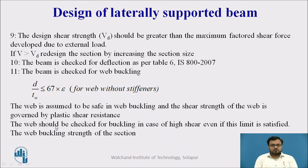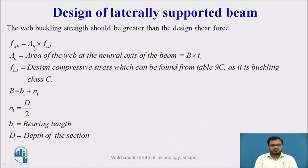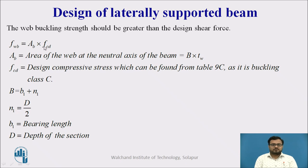The web buckling strength is: FWB = AB × FCD. Here, AB is the area of the web at the neutral axis, calculated as B × TW, where B = B1 + N1; B1 is the bearing length (width), and N1 = D/2 (D being the depth of the section). FCD is the design compressive stress, found from Table 9C, which applies when the buckling class is C; a different table is used for other buckling classes.